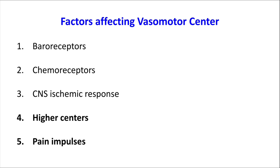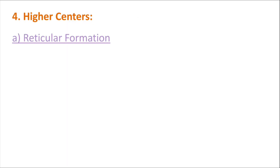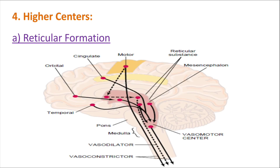Finally, let's discuss the factors that regulate the activity of the vasomotor center. These factors are: baroreceptors, chemoreceptors, CNS ischemic response, higher centers present in the higher portions of the brain, and pain impulses. The first three factors have been explained in the video on arterial blood pressure regulation. Now let's discuss the effect of higher centers and pain impulses.